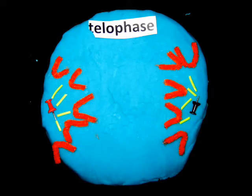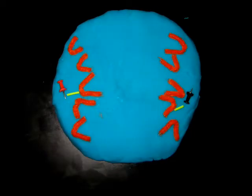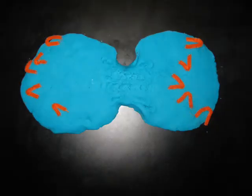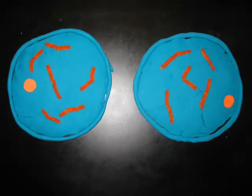The last stage of mitosis is telophase. This is when the chromosomes have safely made their way to the poles of the cell and start to relax, bringing the nuclear membranes back and nuclei starting to appear. The spindle apparatus starts to disappear, but some parts will be reused to build the cytoskeleton.